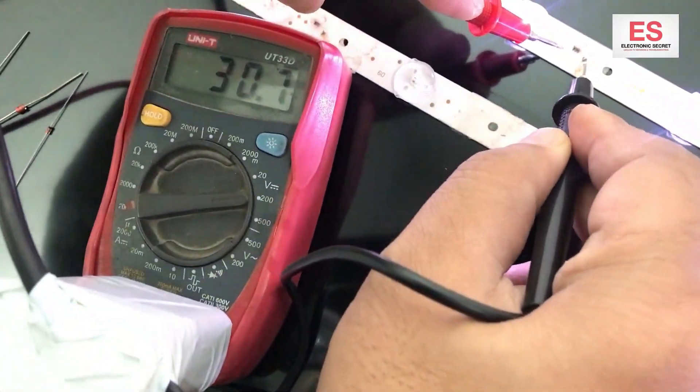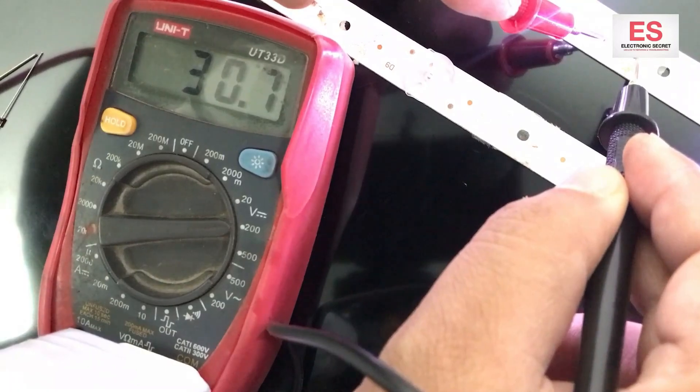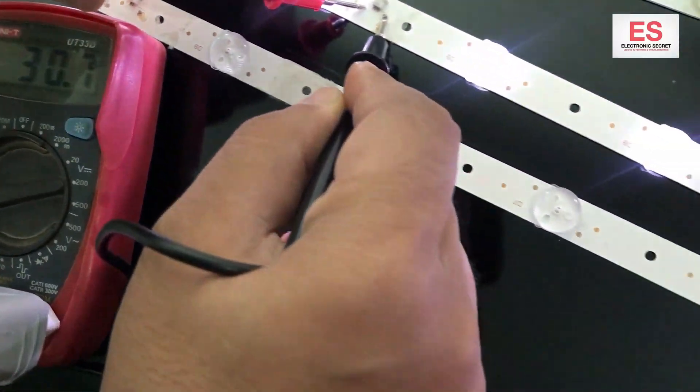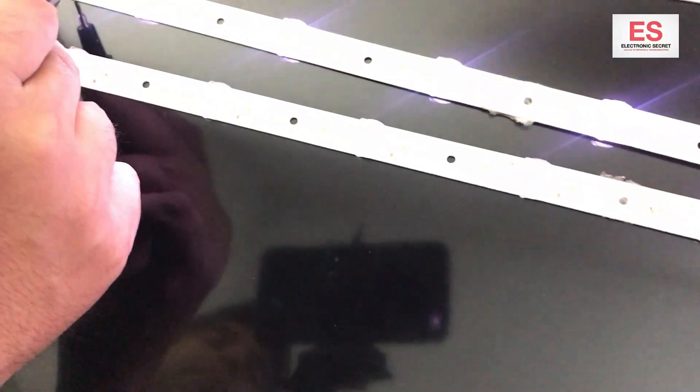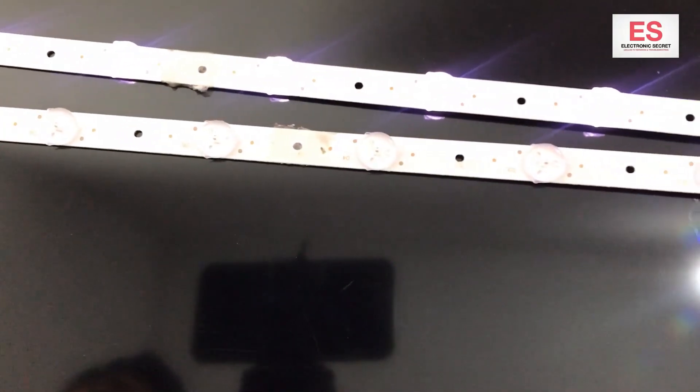This is the good one, a good backlight strip. All its lights are glowing. You can see that the voltage is showing 30 volts on the meter. You can check the bad ones and the good ones with this, so no problem.